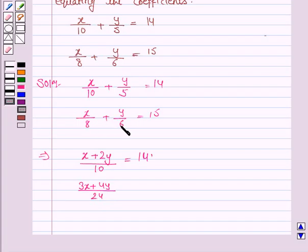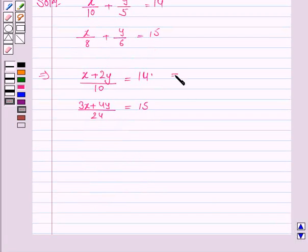LCM of 6 and 8 would be 24. So dividing 24 by 8 we have 3 into x, dividing 24 by 6 we have 4 into y, that is 4y is equal to 15. The first equation becomes x plus 2y is equal to 14 into 10, that is 140. And the second equation becomes 3x plus 4y is equal to 15 into 24, that is 360.